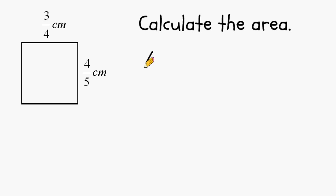To find the area of any rectangle, you multiply its length by its width. The length of this rectangle is 4 fifths of a centimeter. So we have to multiply it by the width of 3 fourths.